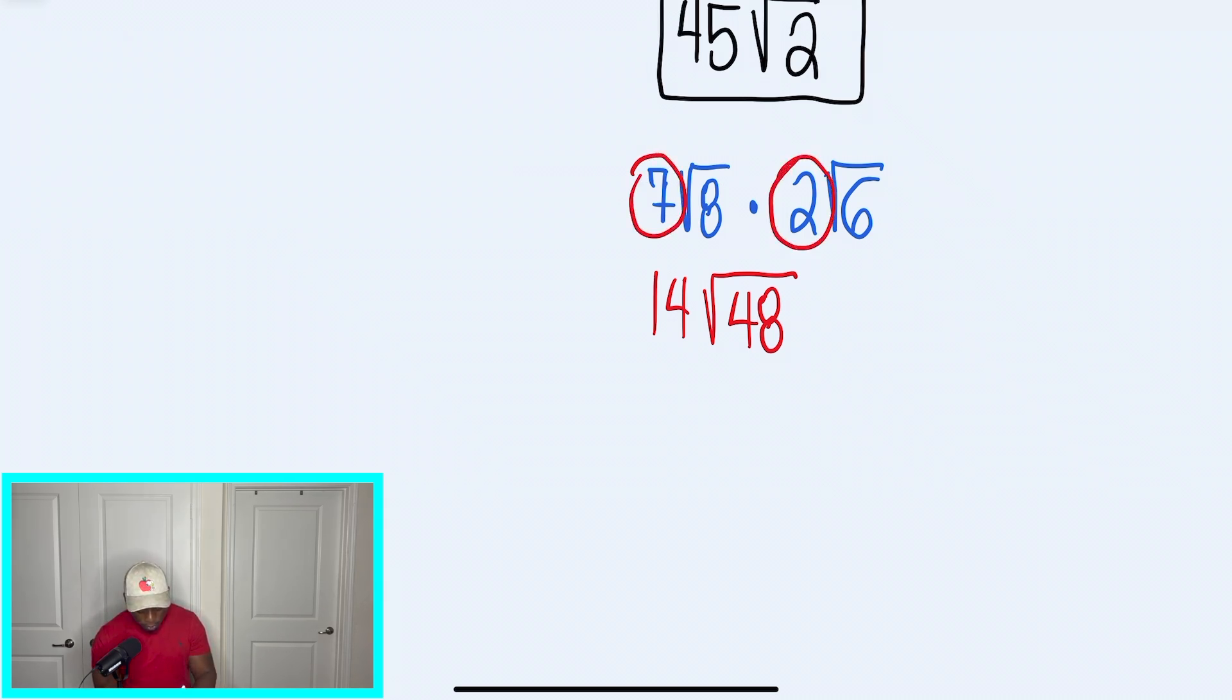So when we go through this, we're going to get 14 radical 48. And I got y'all. So just explain, we got 7 times 2. That gives us 14. And then once we multiply our two radicals, we will get radical 48. Same index, that's rule number 1. Rule number 2, multiply coefficients with coefficients.